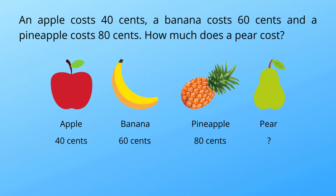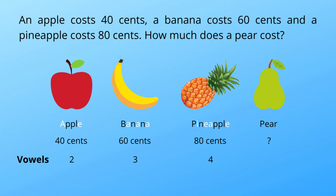Normally when it comes to problems involving names or letters, there are two main things to check: the first one is the letter count, and the other one is vowels. In this case, it's vowels. For apple there are two vowels, for banana there are three vowels, and for pineapple there are four vowels. Now we can see the connection: two vowels equals 40 cents, three vowels equals 60 cents, four vowels equals 80 cents.